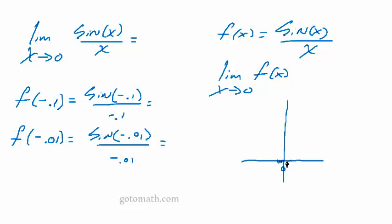And then we do it coming in from the right-hand side. So, 0.1. Sine of 0.1 over 0.1. And then we can do another one here. How about 0.01? Getting closer.